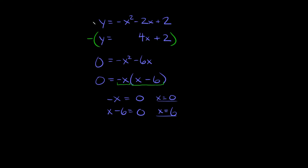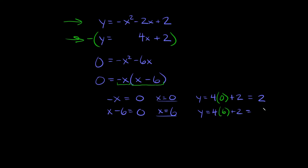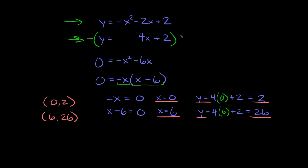Now we have to find the y values paired with each x. We plug both back into one of the original equations. I'm going to use y equals 4x plus 2 because it's easier to work with. Plugging in x equals 0: y equals 4 times 0 plus 2, which equals 2. Plugging in x equals 6: y equals 4 times 6 plus 2, which is 24 plus 2 equals 26. So our two solutions are the ordered pairs (0, 2) and (6, 26).